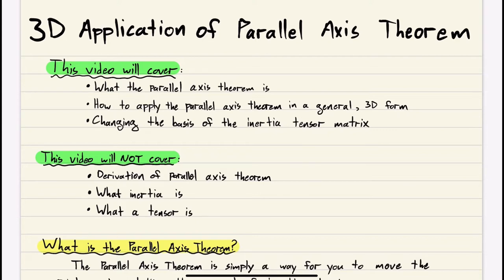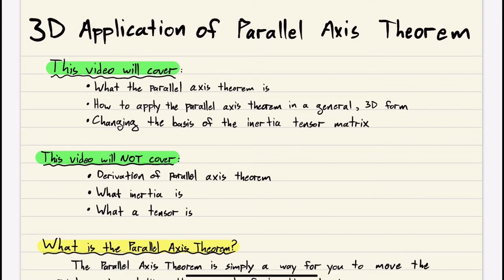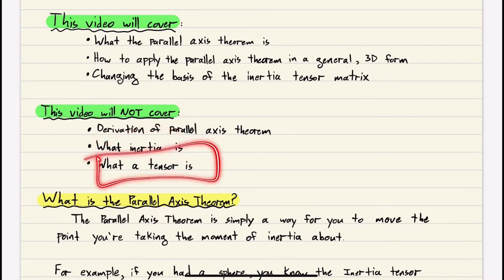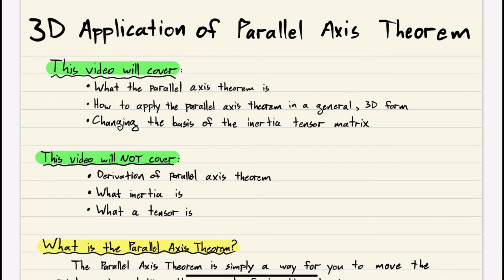This video will cover what the parallel axis theorem is, how to apply the parallel axis theorem in general — the 3D form. If you understand it in 3D, you can do it in 2D. We'll also cover changing the basis of the inertia tensor matrix, so if you want to represent your inertia on a different basis, how do you do that? This video will not cover the derivation, and I'm not going to explain what inertia is or what a tensor is — those will be for another video.